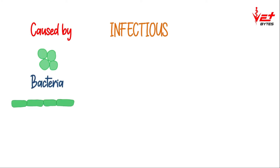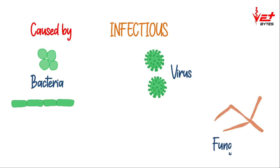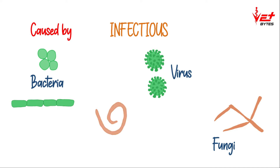Pneumonia can be caused by infectious agents like bacteria such as Streptococcus, Mycobacterium, Pasteurella, etc. Viruses like adenovirus, parainfluenza virus, etc. Fungi like Aspergillus fumigatus, and parasites like Paragonimus species and Dictyocaulus species.